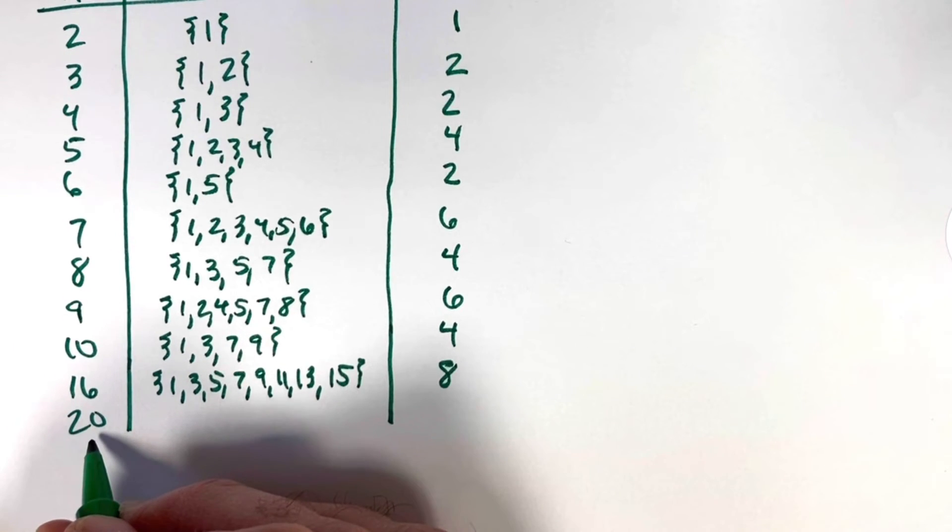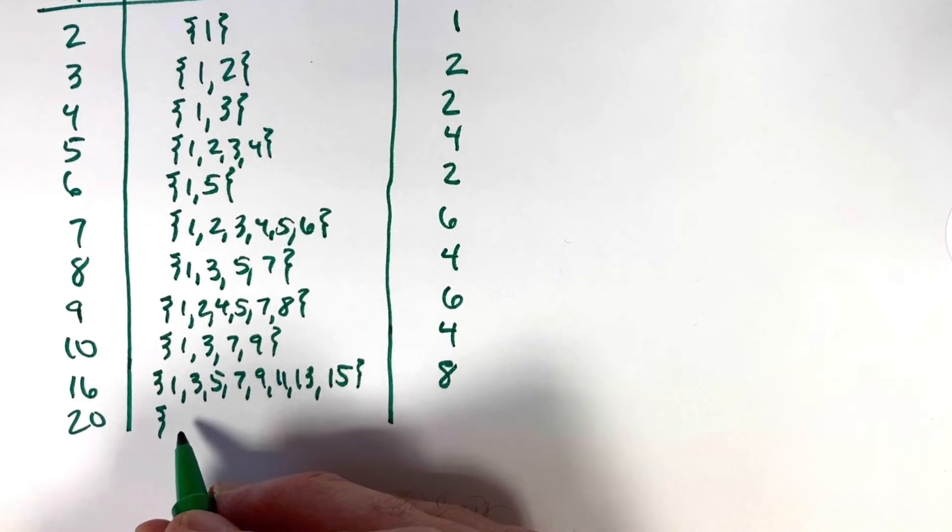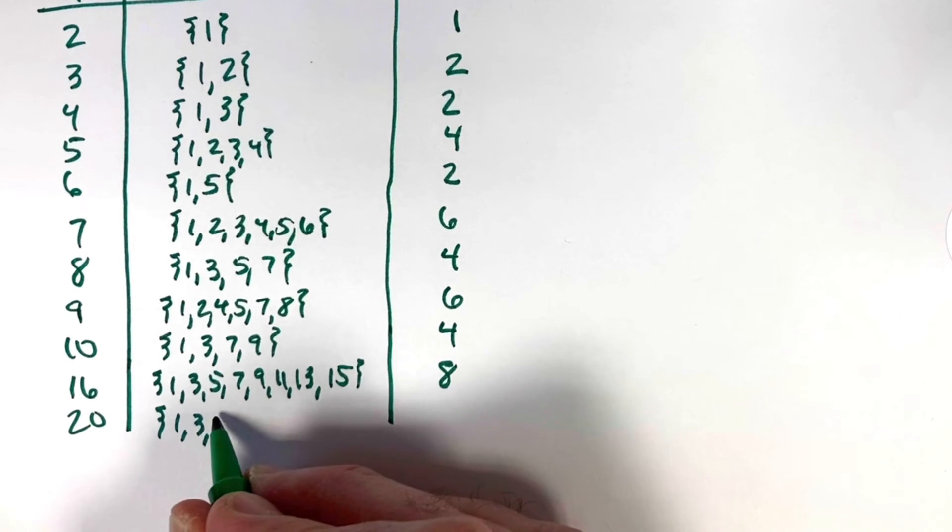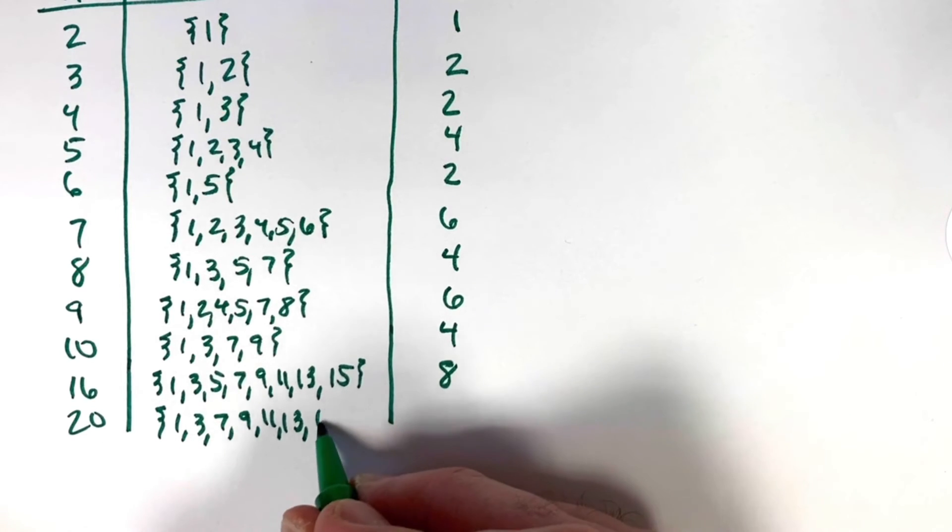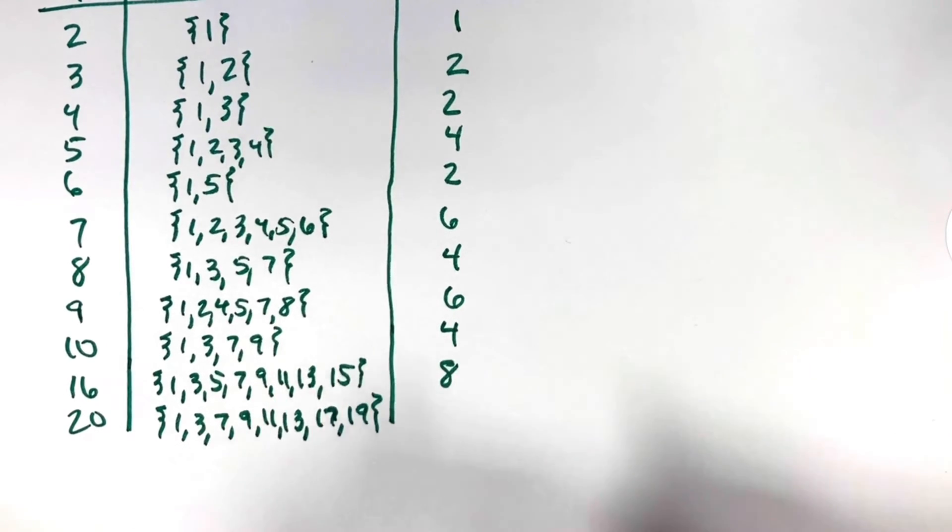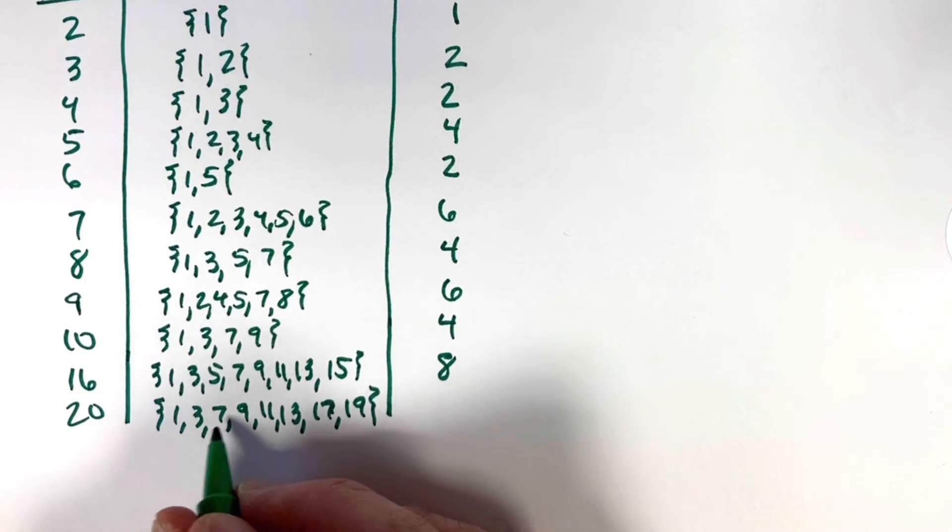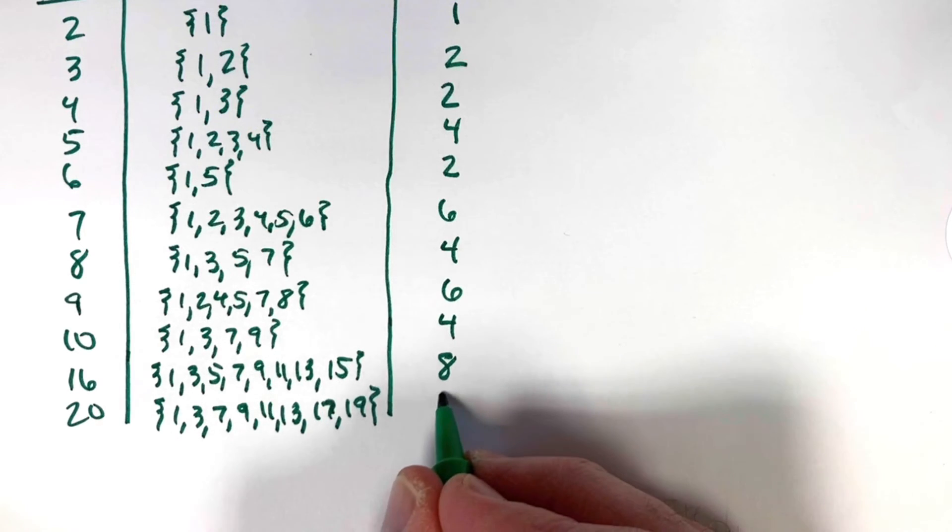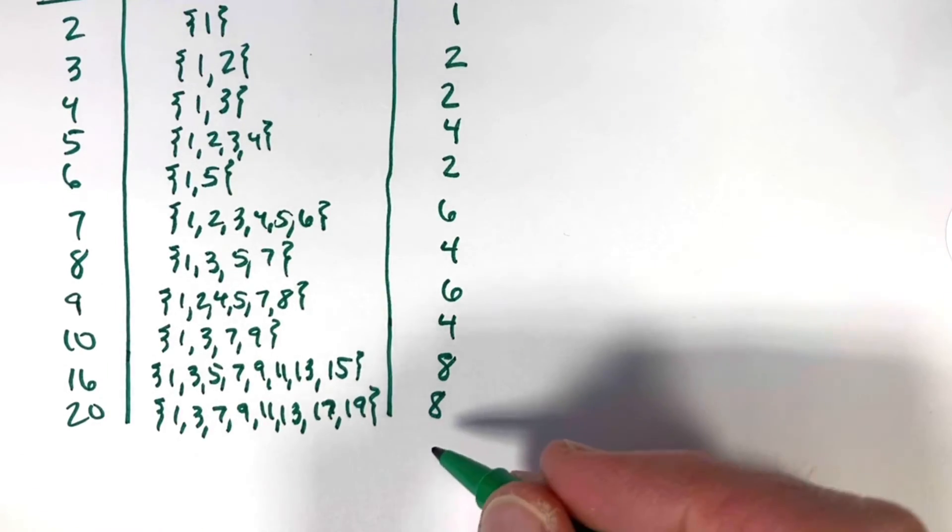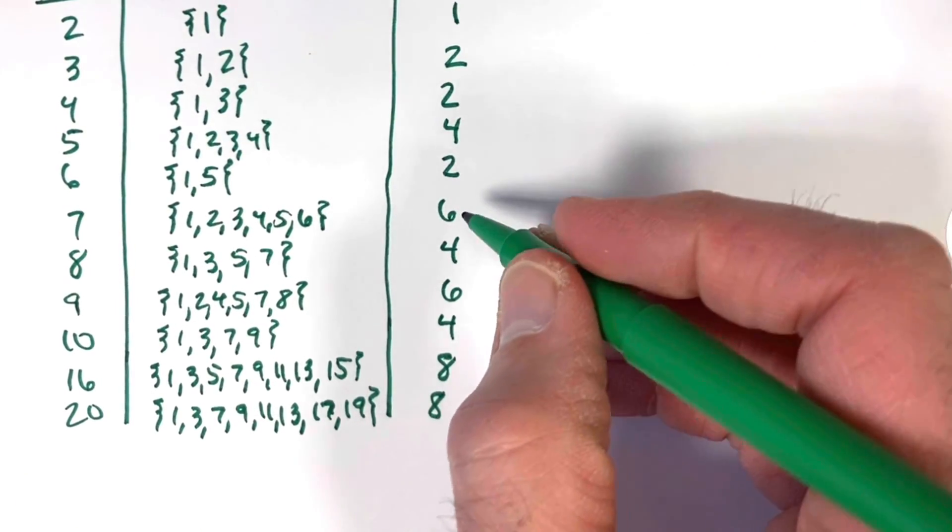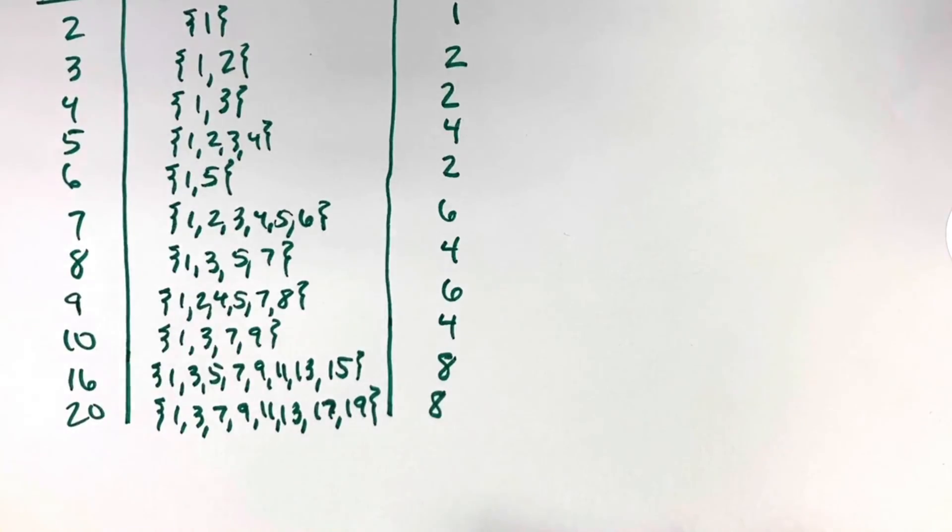For n = 20, which is 2² × 5, we want to avoid even numbers and also avoid 5 and 15. So we have 1, 3, skip 5, then 7, 9, 11, 13, skip 15, then 17, and 19. These are the positive integers less than 20 that are relatively prime to 20. There are 8 of them, so φ(20) = 8. It's interesting to note that 8 = 2 × 4, just like 20 = 4 × 5. Maybe that's not a coincidence.